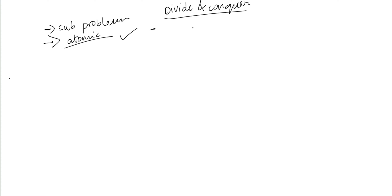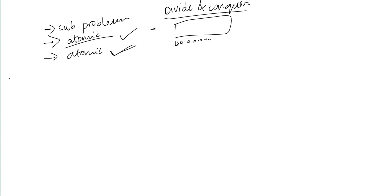Once we reach the smallest atomic sub-problems, we can solve them individually. After solving each small problem, we then merge the solutions together. This is the overall motto of the divide and conquer algorithm.